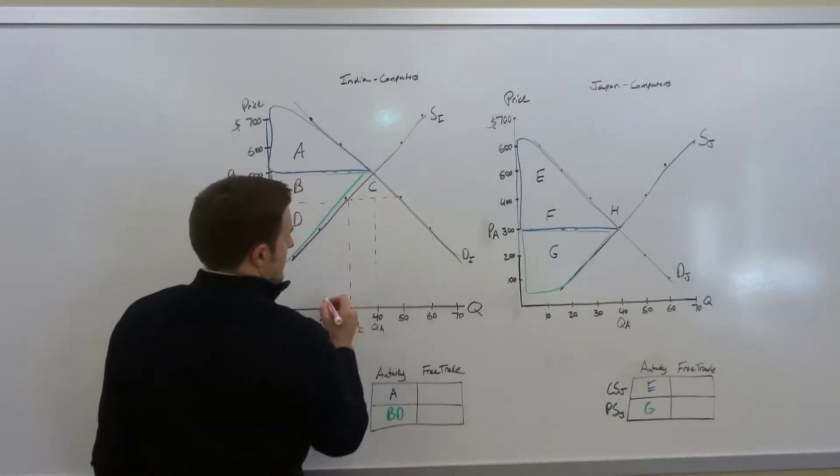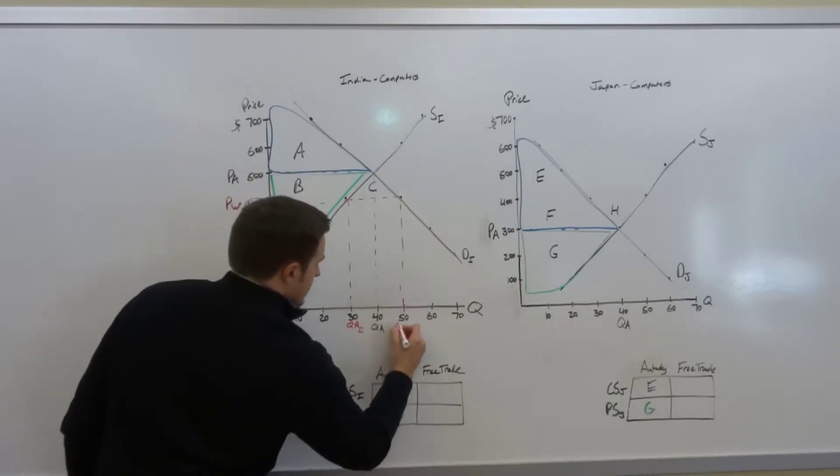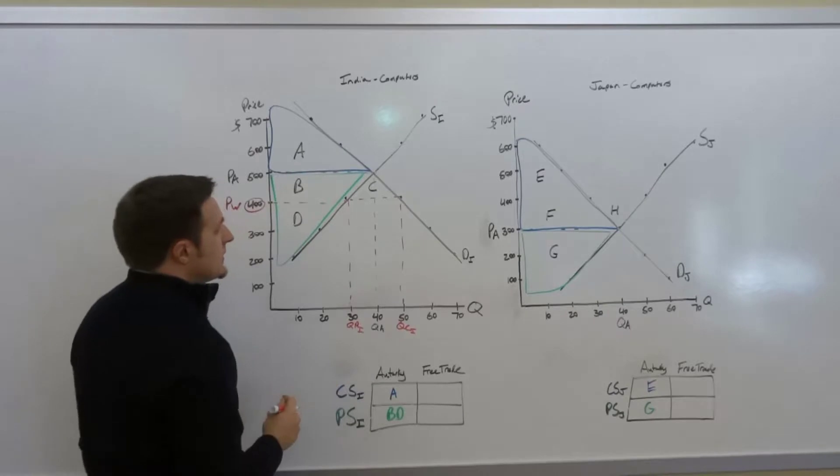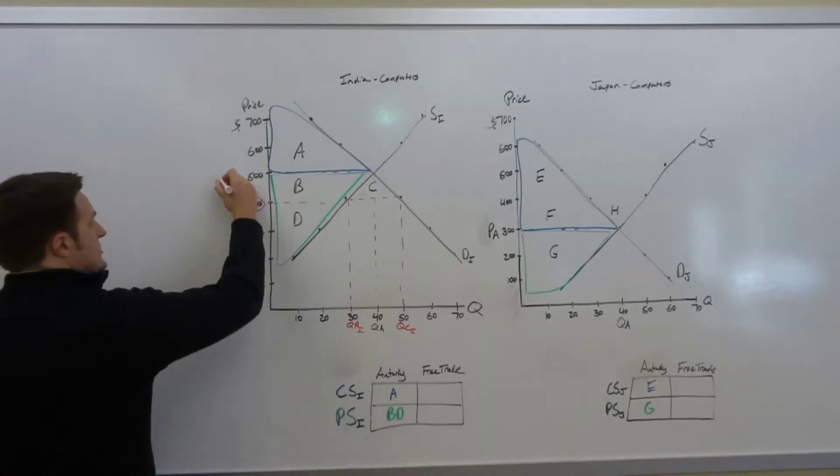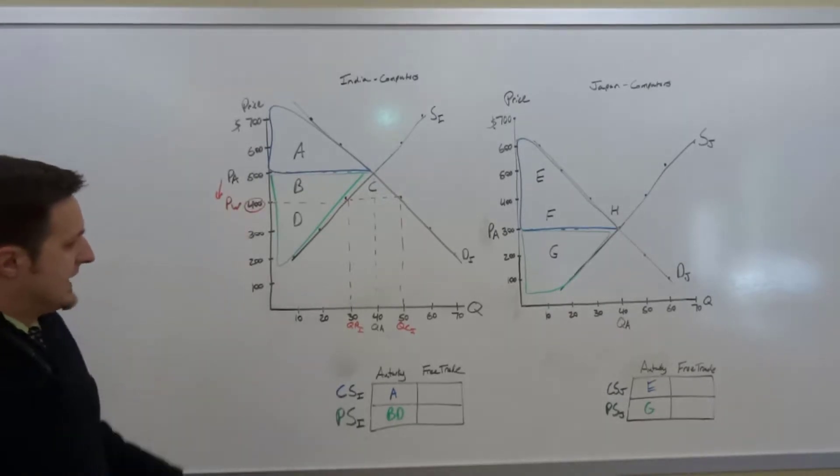The quantity consumed though is going to be greater. At a lower price, the quantity consumed in India is going to be 50, because now that computers are going to be cheaper, we have access to cheaper computers, more people in India are going to want to buy them.